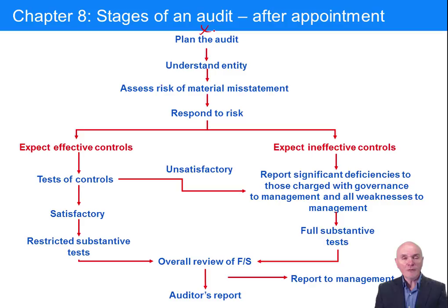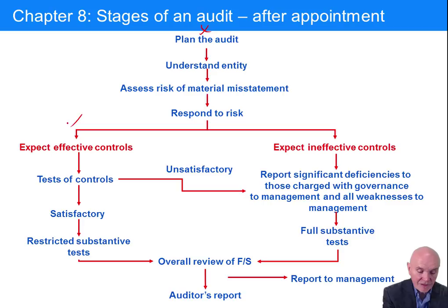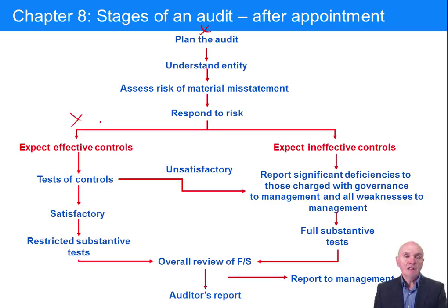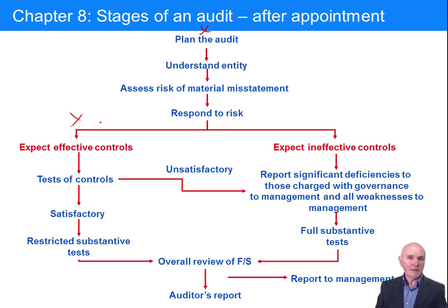Broadly speaking, the pathway through the audit splits. You have some companies, particularly large well-run companies, where you expect effective internal controls. This is where the company's accounting system is very well set up — lots of reconciliations, lots of people authorizing documents, goods received notes matched with invoices, so you're not paying for goods you haven't received. A really very tightly run company.